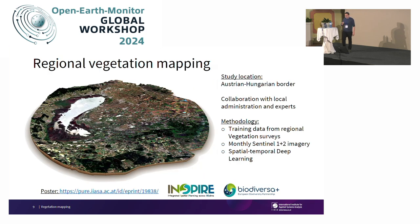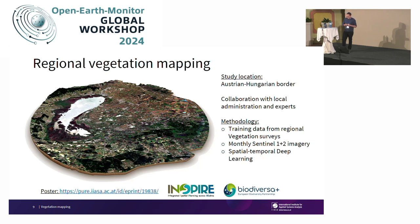One example I'm currently working on — and this is work in progress — is a regional vegetation mapping approach situated in the Austrian-Hungarian border region. It's a close cooperation with local administration and experts. Here I'm using essentially lots of unpublished, non-publicly available regional vegetation surveys by local communities and the local state, to essentially parameterize vegetation mapping with a very detailed legend.